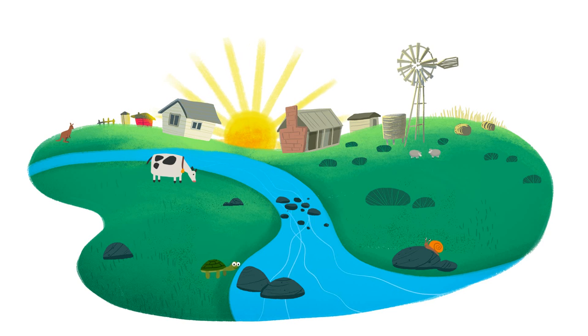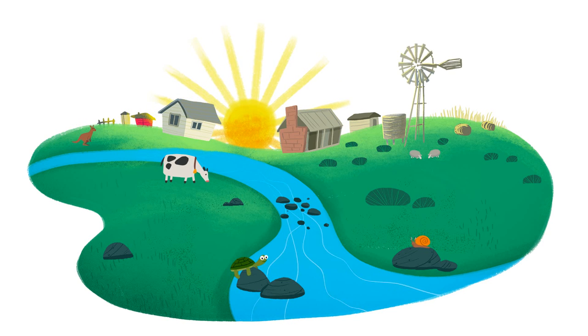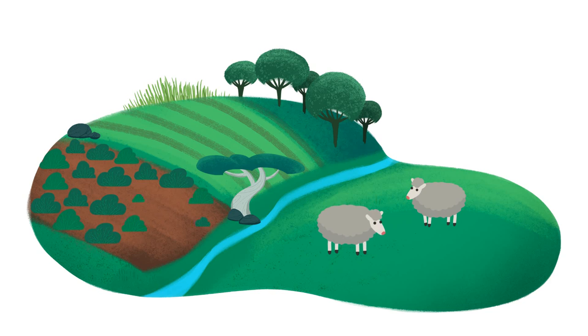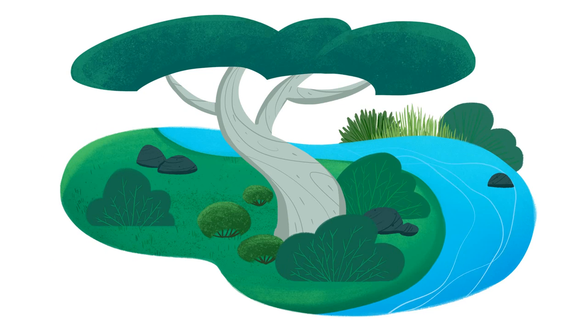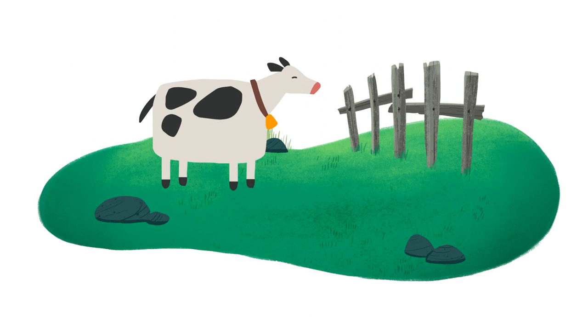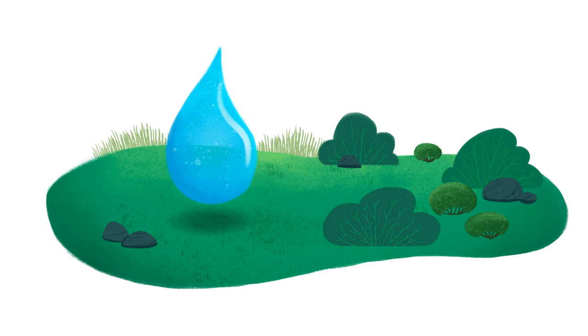We're working with the community to help our rivers and wetlands cope by supporting sustainable farming, revegetation, fencing, fish stocking, re-snagging and use of environmental water.